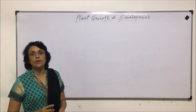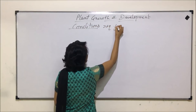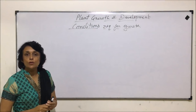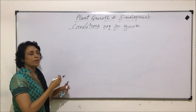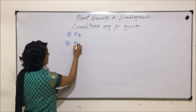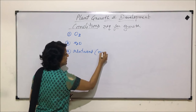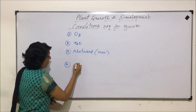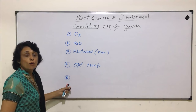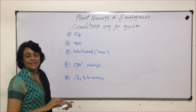Let us now talk about the conditions which are required for growth. Let us write down the list of those conditions first and then we will see how these conditions play an important role. First, oxygen, then water which is essential for growth, nutrients — and in these nutrients we are basically talking of the minerals which are required — optimum temperature, and phytohormones. These are the main conditions.